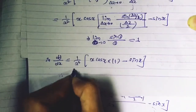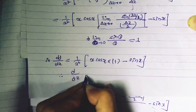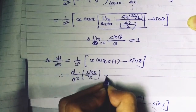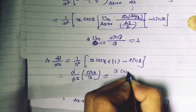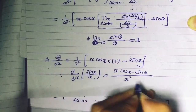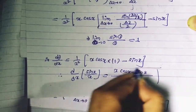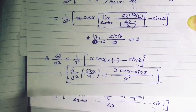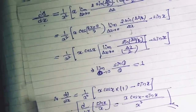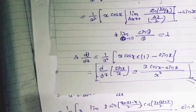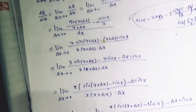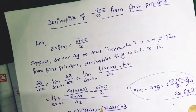Therefore dy/dx = (1/x²) · [x·cos(x) − sin(x)], which gives us d/dx[sin(x)/x] = (x·cos(x) − sin(x)) / x². This is the required derivative of sin(x)/x from first principle.